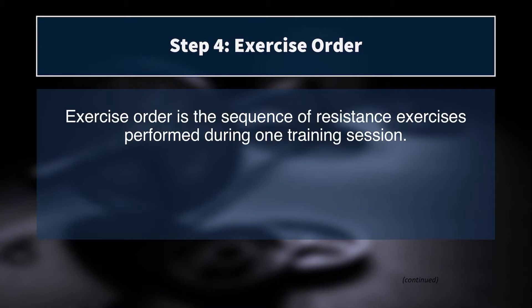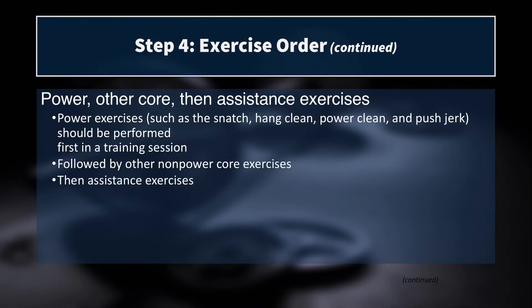The NSCA lays out a really good framework for how we can make these exercise order decisions. The first type of exercises we want to employ are power exercises, then other core or primary exercises. Remember, the NSCA uses the word 'core' to actually mean primary — it doesn't mean your abs and midsection. Think back squats and bench press when they say core exercises. And then assistance exercises. So: power first, then other core structural movements, and then your assistance movements.